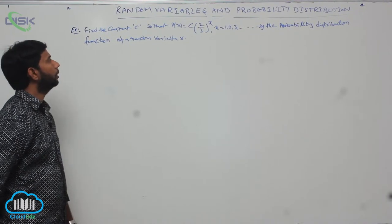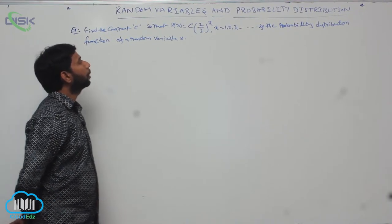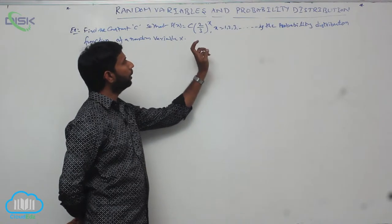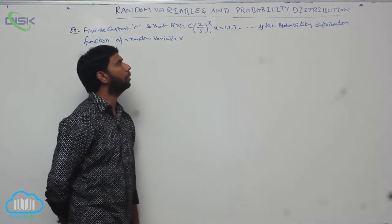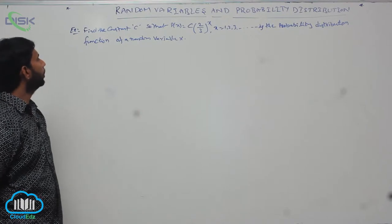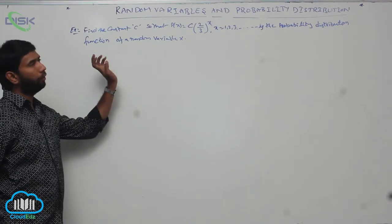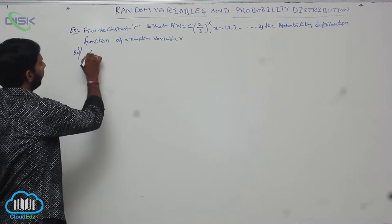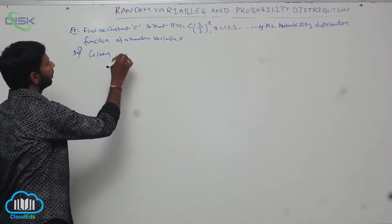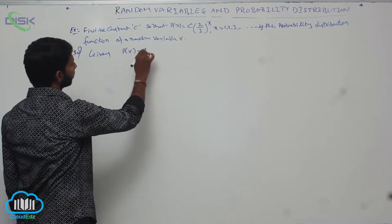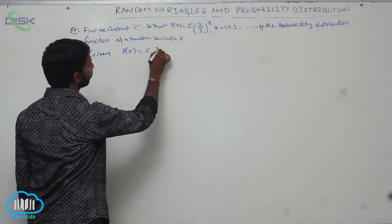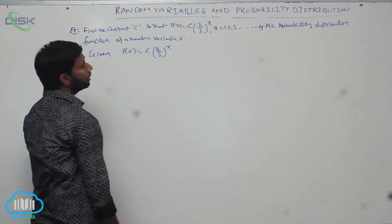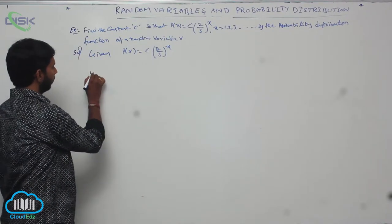Find a constant C so that the probability function P of X equals C times (2/3)^X, when X equals 1, 2, 3 and so on, is a probability distribution function of a random variable X. Given the probability distribution function P of X equals C times (2/3)^X.